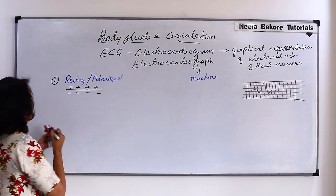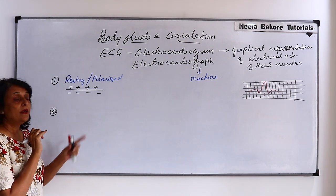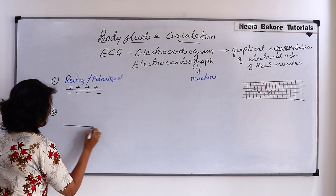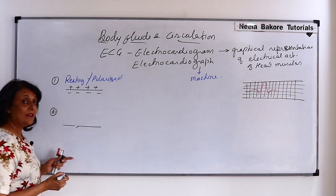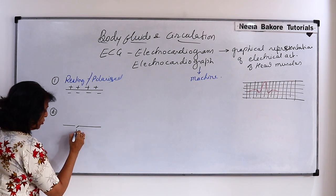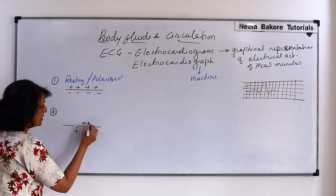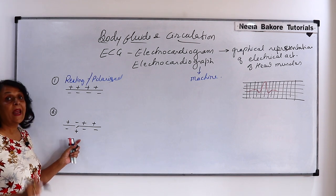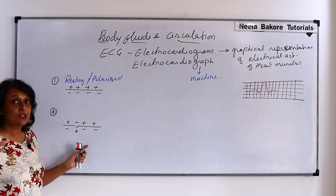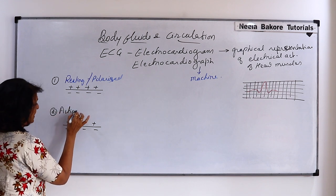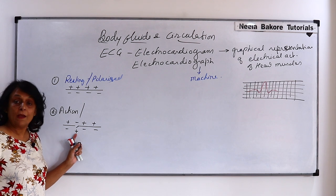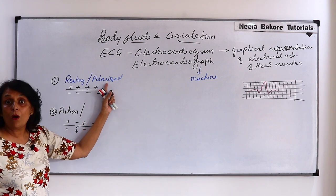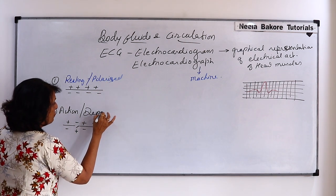When there is a stimulus, the permeability of the membrane changes at that point — channels open and sodium ions enter. In the affected area, the inside becomes positive and the outside becomes negative, which is the opposite of the original. The original charge is reversed, so we call this state depolarized.